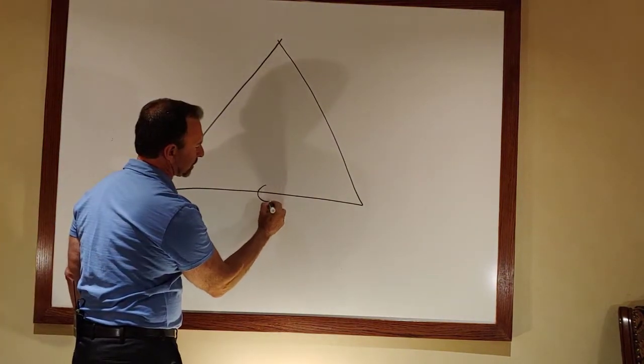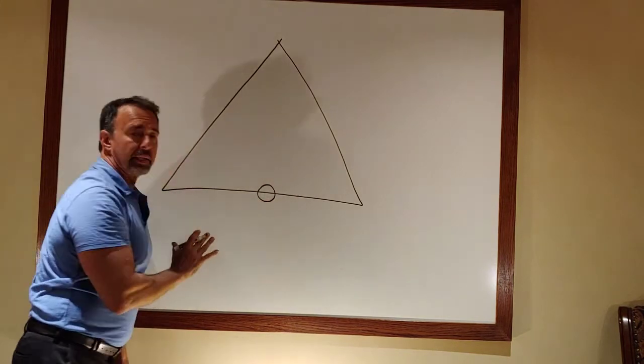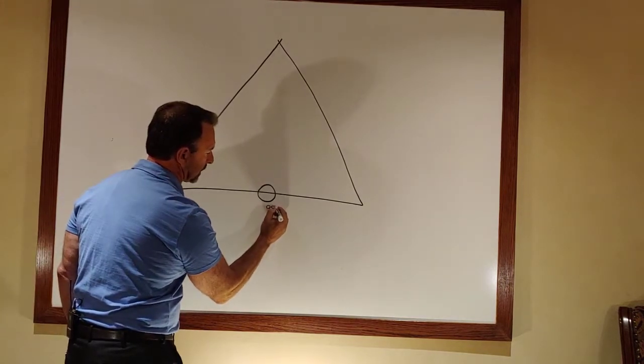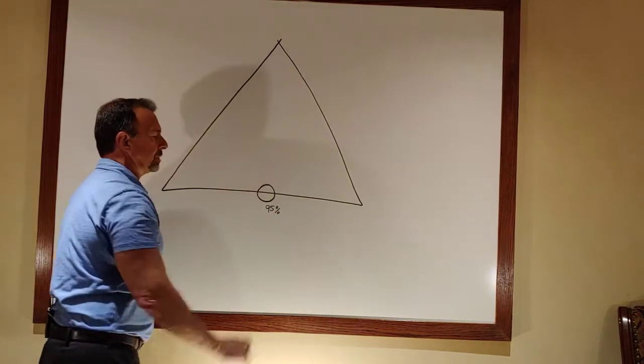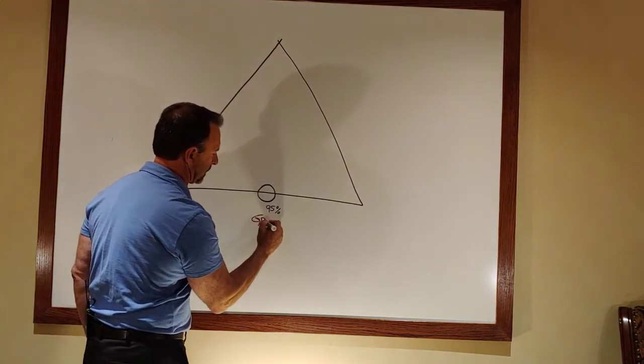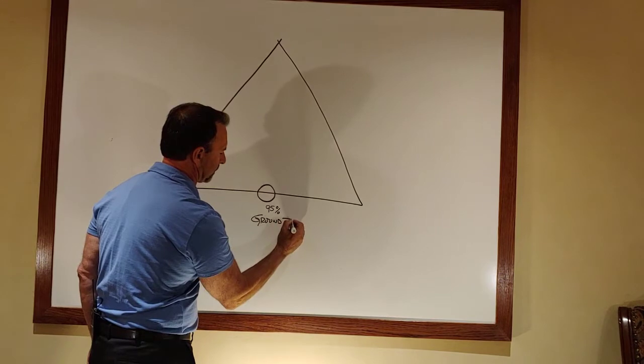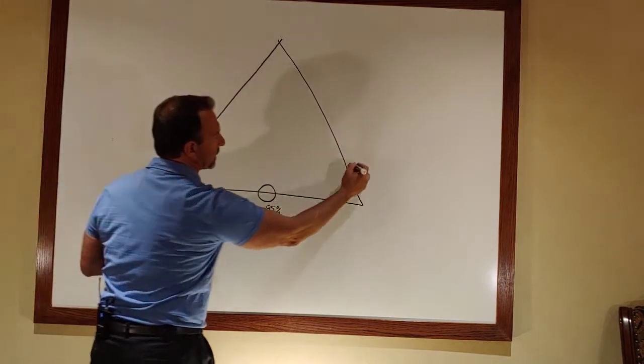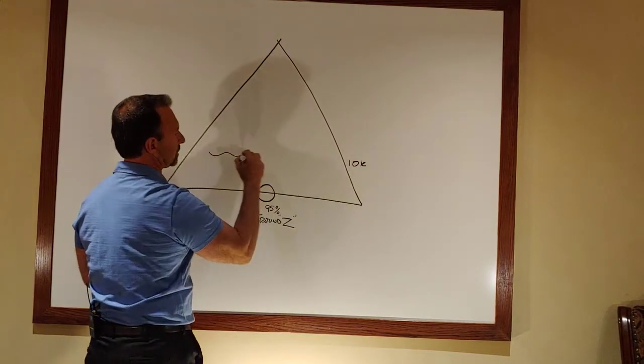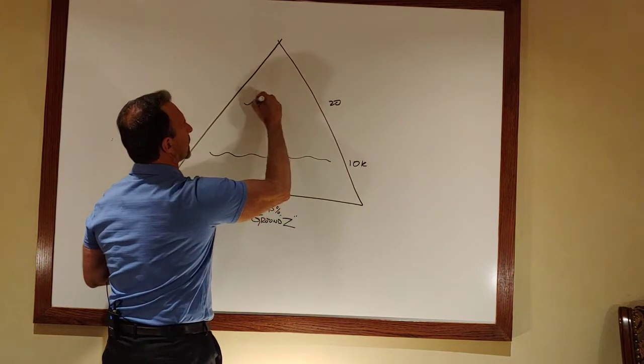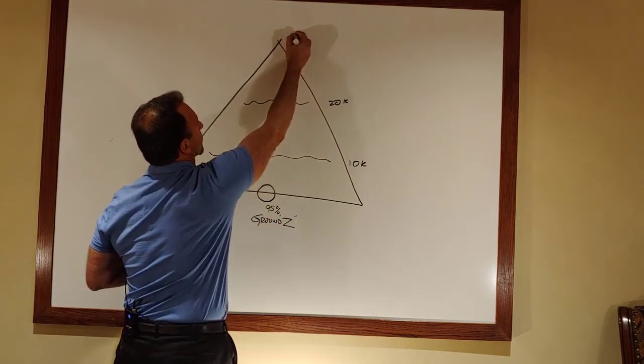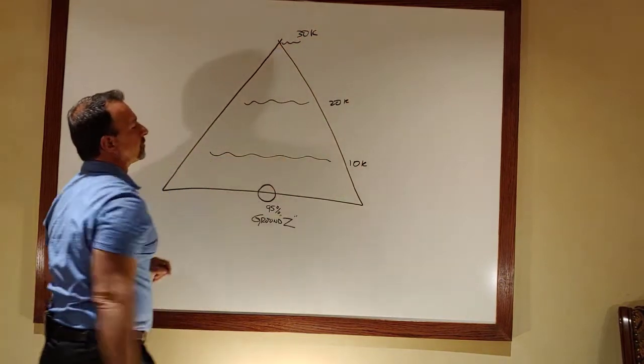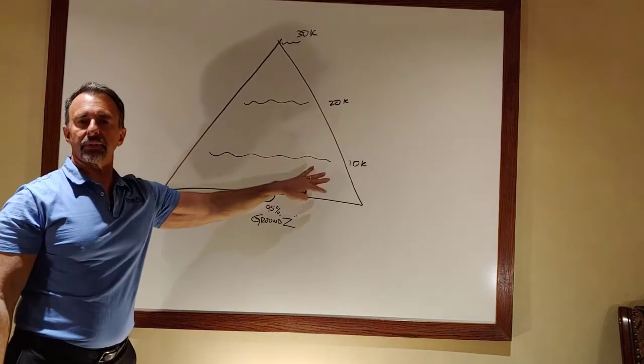The bottom of the pyramid, the base here, is where 95% of all businesses are run. And we're going to call this ground zero. Right about here, we'll call this 10k. This is 20k. And this is 30k. So first, let's define these different levels.